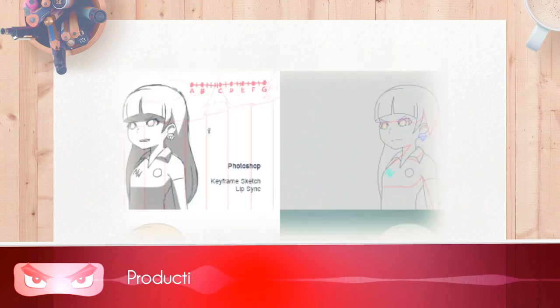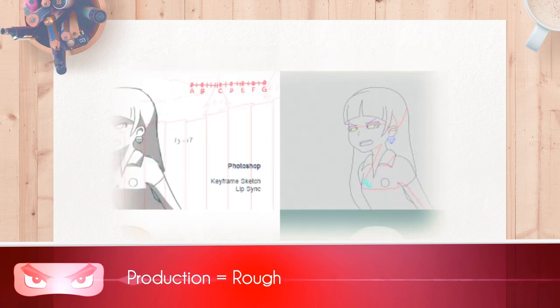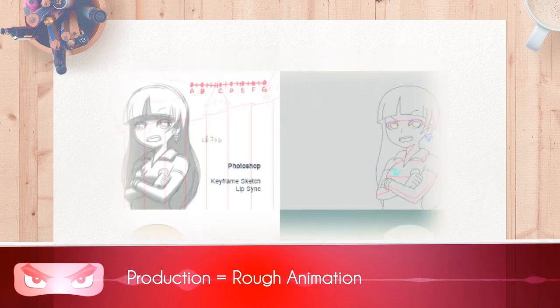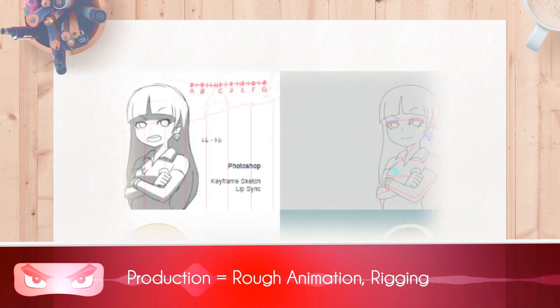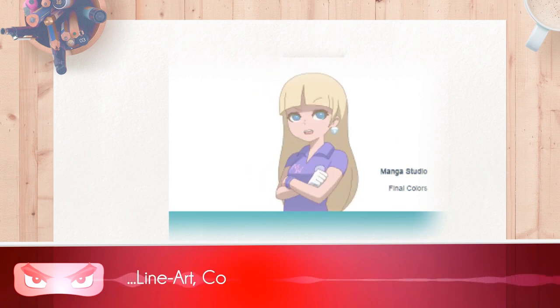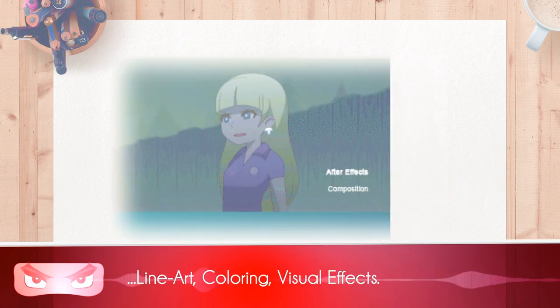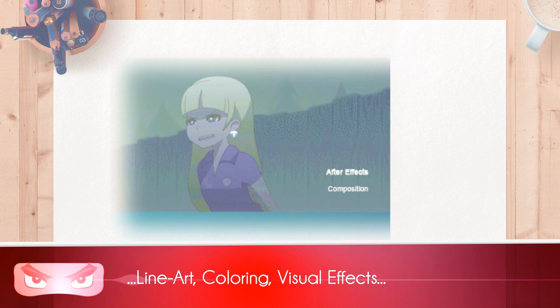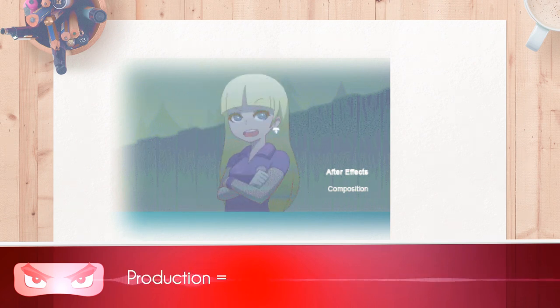The production phase is the actual animation. It includes the rough animation, the rigging if there's a puppet, the cleanup, the line art, the coloring, and the visual effects. All of that is in production.